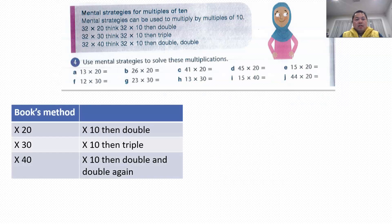Okay, next, they also ask you to use mental strategies to multiply by 20, by 30, or even by 40. So the book's method says that if it's multiplied by 20, it's multiplied by 10, then double. Multiplied by 30 is basically times 10, then you've tripled the number. And then if you multiply by 40, it's multiplied by 10, then you double and double again.